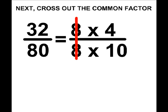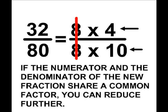Then you must examine the fraction that we have left, in this case 4 tenths, and ask yourself, is there a common factor that remains of the 4 and the 10? If there is a common factor remaining of your new fraction, then you can reduce further.